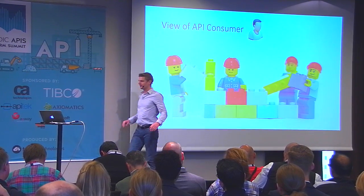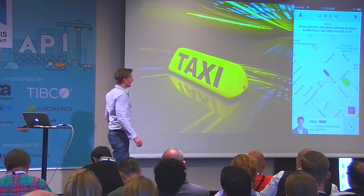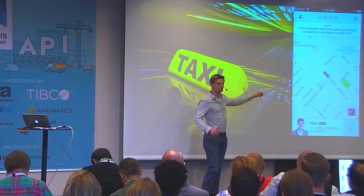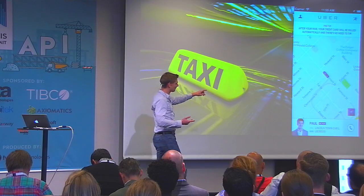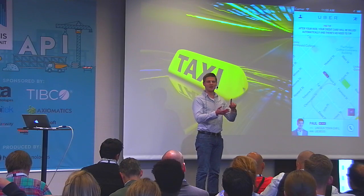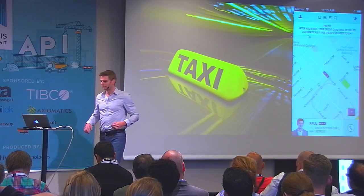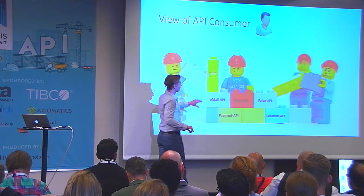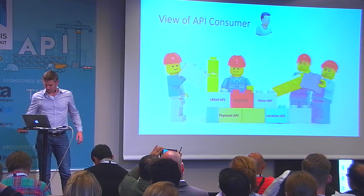For example, take the Uber app. On the Uber app you have several functionalities: a positioning service, a map service, a way to interact with the driver, some kind of voice over IP, payment for drives, and receipts emailed to you. All of this functionality is actually provided by APIs. So building something like that is pretty simple — it's just Lego bricks put together with a user interface on top.